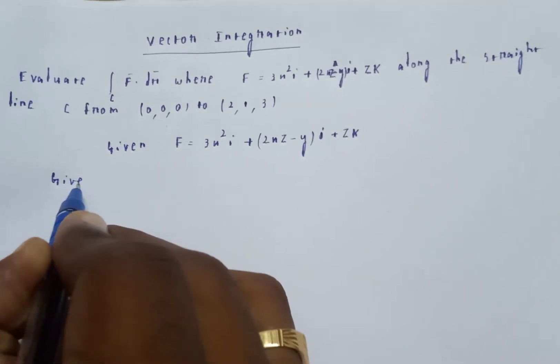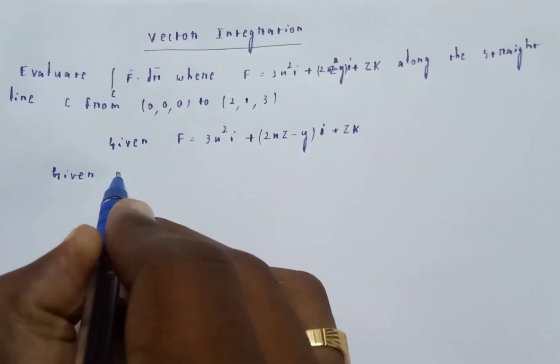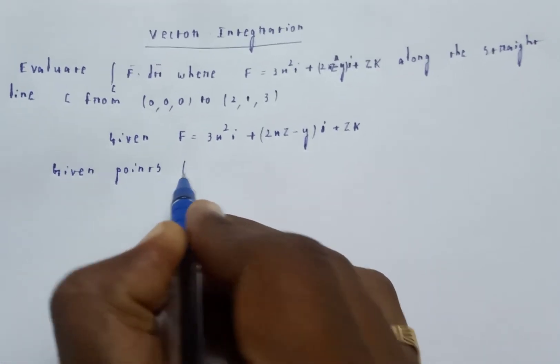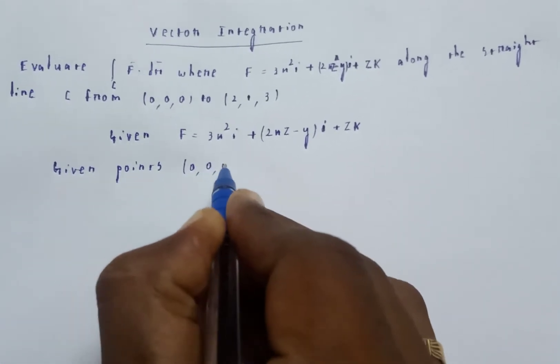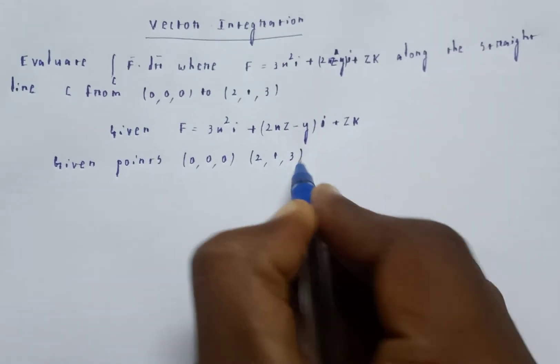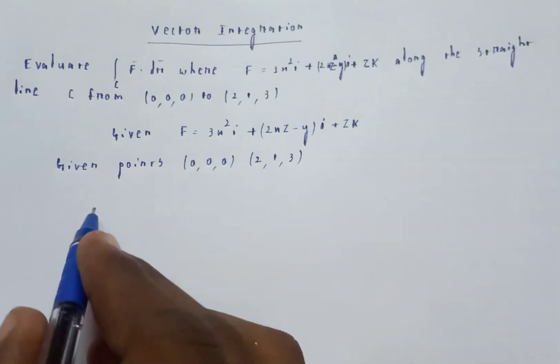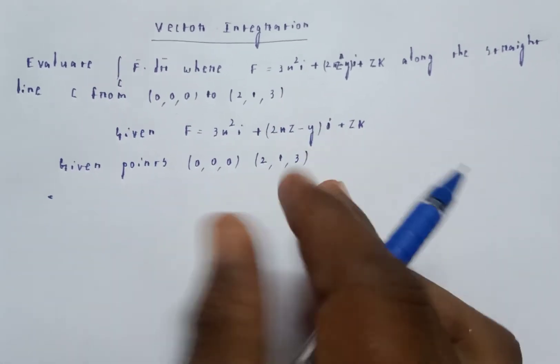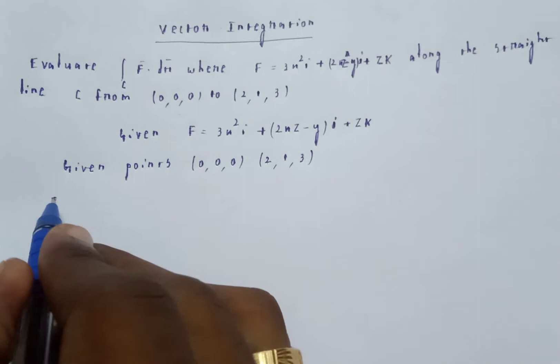The two points given are (0,0,0) and (2,1,3). We need to find the line joining these two points.